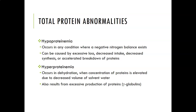A negative nitrogen balance can be caused by excessive loss, decreased intake, decreased synthesis, or accelerated breakdown. Excessive loss occurs in nephrotic syndrome, where the kidneys lose large amounts of protein. Decreased intake is seen in starvation or simply not eating enough protein. Decreased synthesis can result from liver issues such as cirrhosis, since the liver produces nearly all proteins except the globulins.